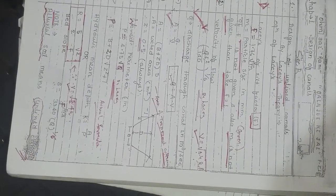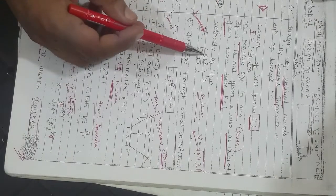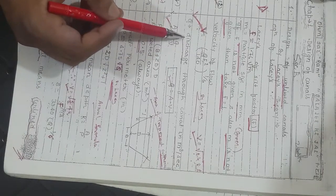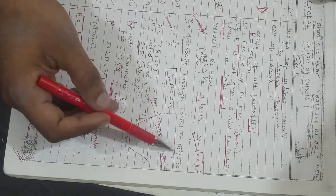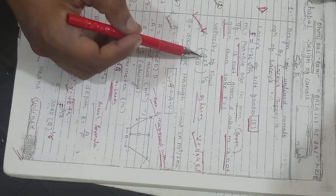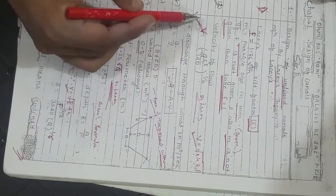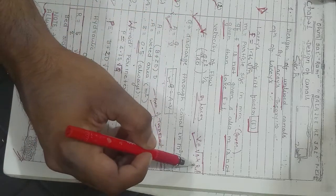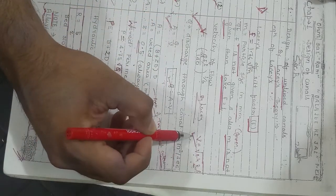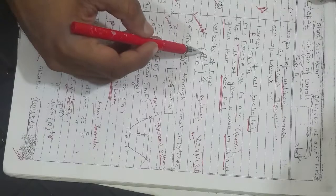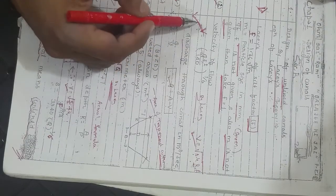Q is the discharge in m³/s. This Q will be given to you. If you know Q, you will use this formula. If you know the value of R, you will use this formula.